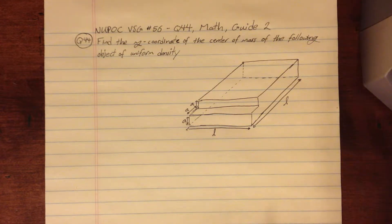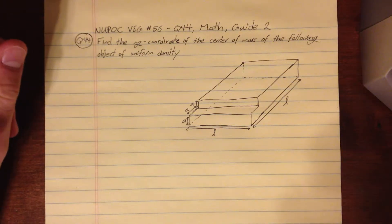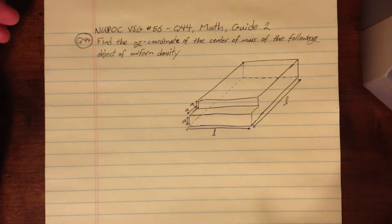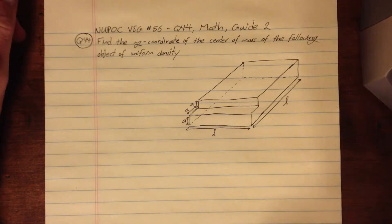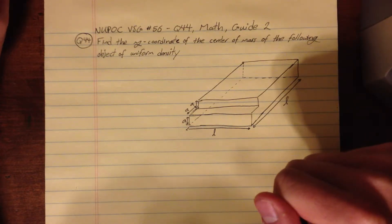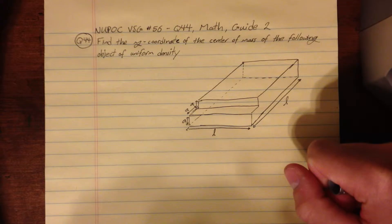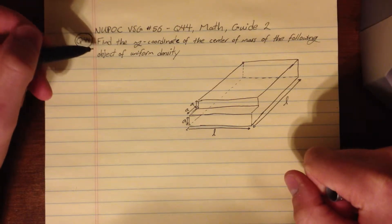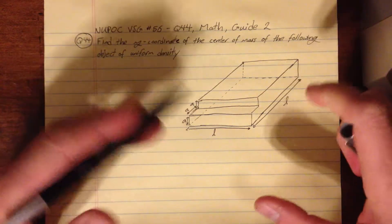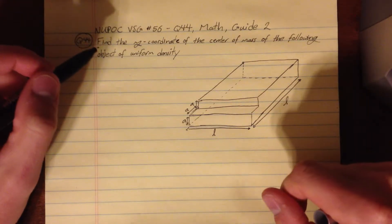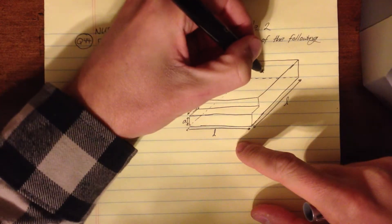Okay, welcome to the NUPAC video study guide number 56. Let's go ahead and take a look at question 44 in the math section of guide 2. This is kind of almost like a physics problem, or of course most physics problems are math anyways, but this is more like statics or materials or something like that. But we're basically being asked to find the y-coordinate of the center of mass of this geometry, this shape, and we're given that it has a uniform density rho.